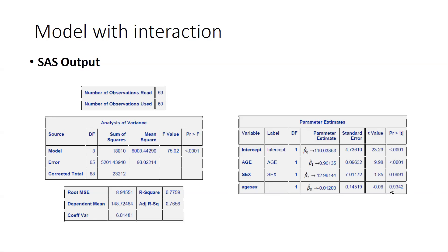The last term is the interaction term. Looking at the p-value, the interaction term is not significant. There is a formal statistical test for the interaction term: we use the parameter estimate of beta 3 divided by the standard error to get the t-value, and compare it with the critical value of the t-distribution at the 0.05 test level, and this is not significant.